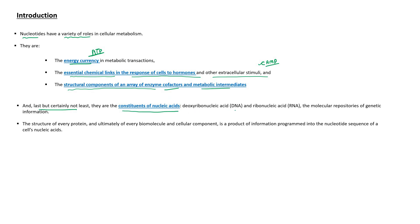Nucleic acids are of two types: DNA and RNA. DNA stands for deoxyribonucleic acid and RNA stands for ribonucleic acid. DNA and RNA are the molecular repository of genetic information. In living organisms, DNA is the only genetic material; RNA serves as genetic material in viruses.